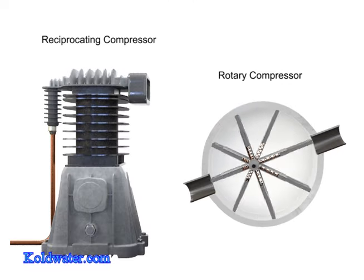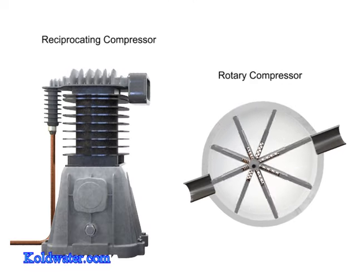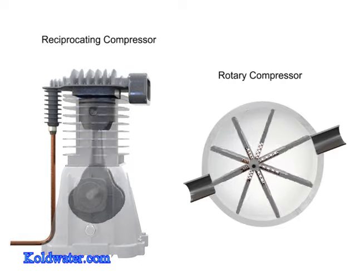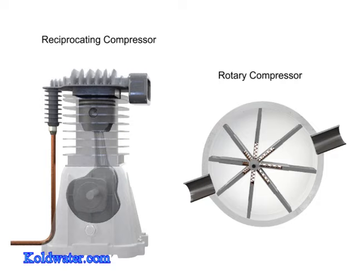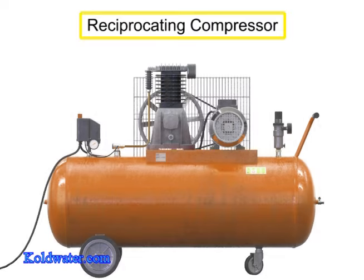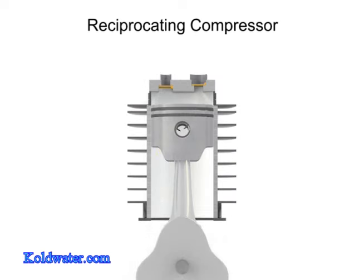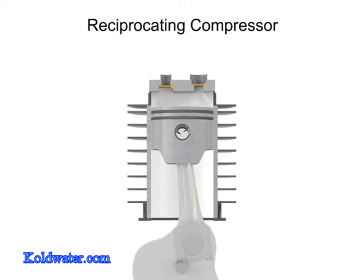Rotary compressors are typically free of the vibration and pulsation that occurs with reciprocating compressors. A typical reciprocating compressor consists of a housing with an internal piston connected to a crankshaft. As the crankshaft turns, a piston reciprocates within the cylindrical housing.